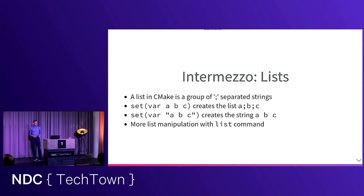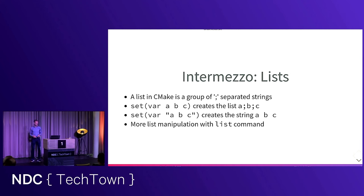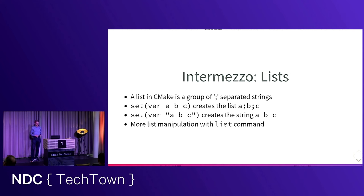A quick note: a list in CMake is just a group of strings separated by semicolons. You can create a list with the set command — putting values in double quotes gives you a string with spaces, without quotes separates them into list items. More powerful list manipulation is done with the list command, which has many sub-commands. Remember: a list in CMake is just a string with embedded semicolons, which also means a plain string is a list of one item.